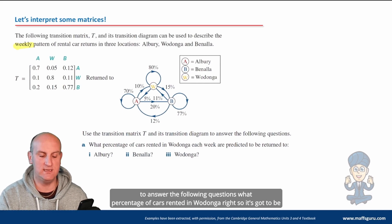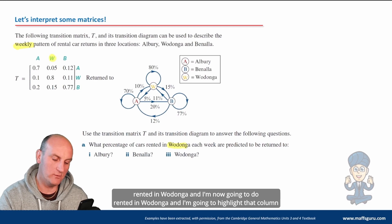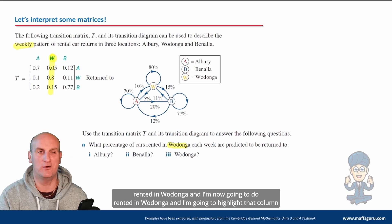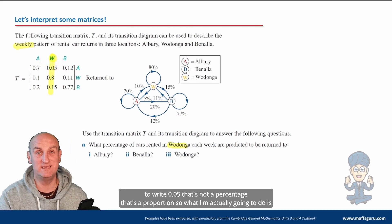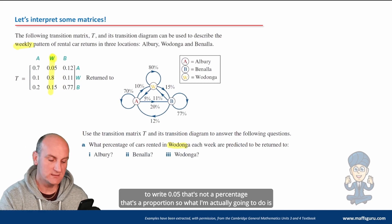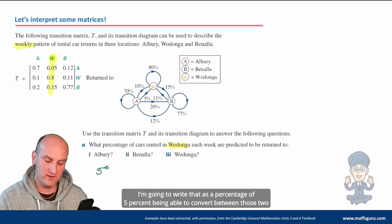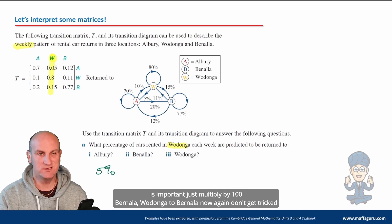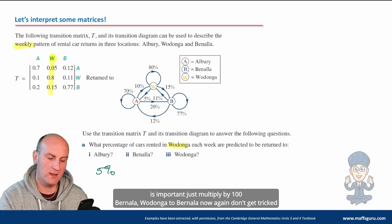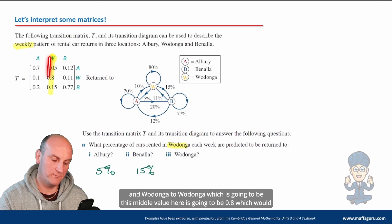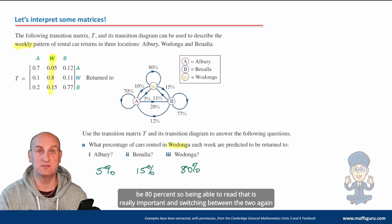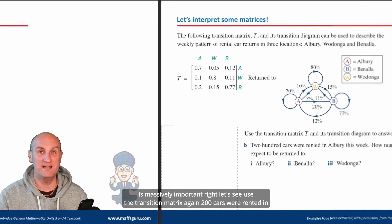What percentage of cars rented in Wodonga are predicted to be returned to Aubrey? So we're looking at rented in Wodonga — I'm going to highlight that column. Aubrey is the first value there. I'm not going to write 0.05, as that's not a percentage, that's a proportion — so I'm going to write it as 5%. Wodonga to Banala: looking for that intersection — 0.15 would be 15%. And Wodonga to Wodonga, the middle value, is 0.8, which is 80%. Being able to read that and switch between proportions and percentages is massively important.